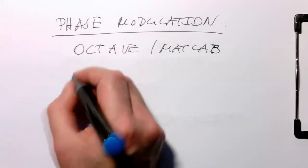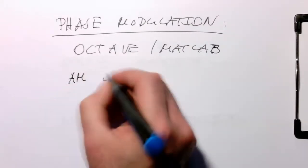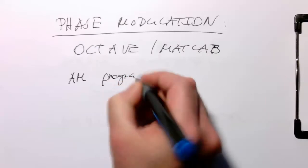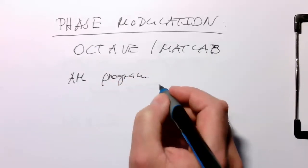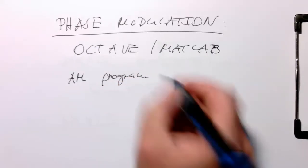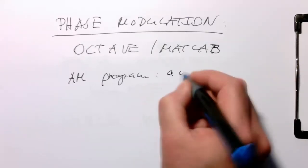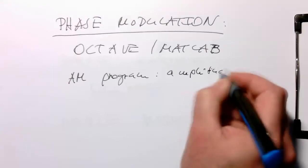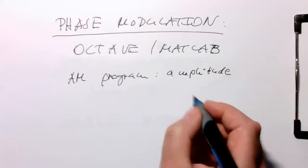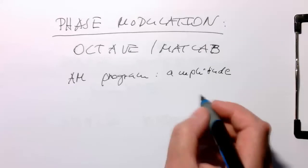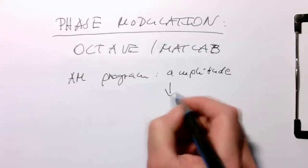So we take our AM program and in this AM program remember we manipulated the amplitude information and replaced the amplitude information into a multiplier.